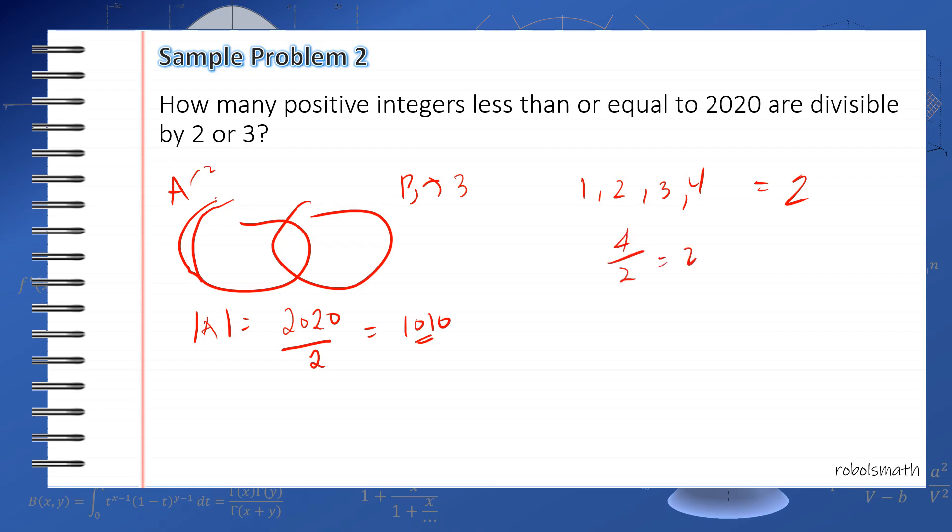Similarly, for B, that's 2020 over 3. That's equal to 673 and remainder 1, or 673 and one-third. So the cardinality of B is the closest integer, which is 673.